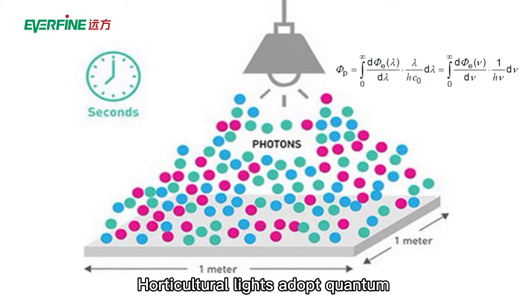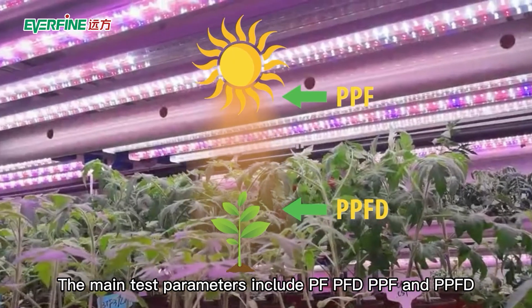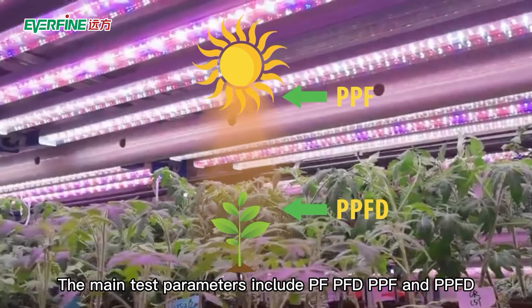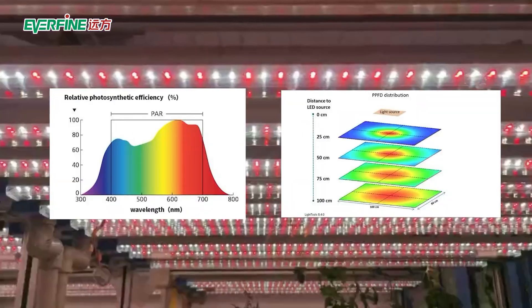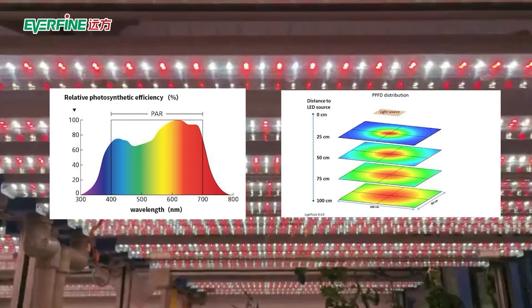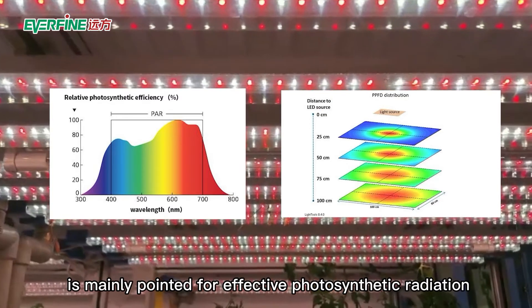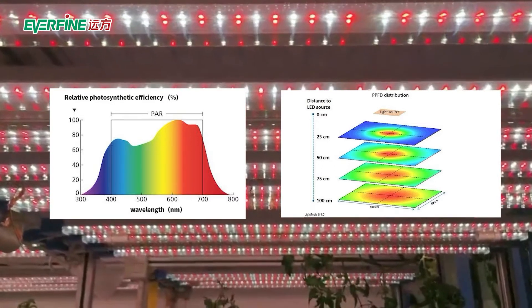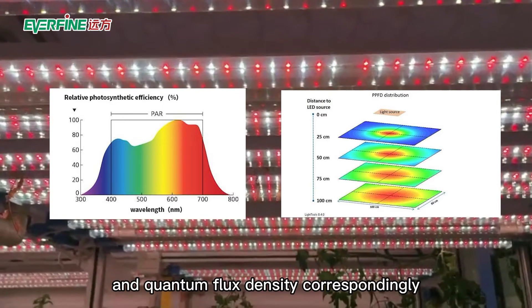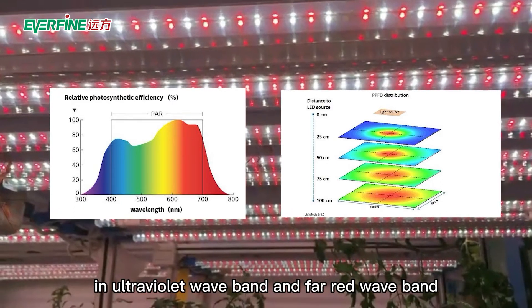Horticultural lights use a quantum or radiation evaluation system. The main test parameters include PPF, PPFD, and related metrics. PPF and PPFD are primarily focused on effective photosynthetic radiation between 400 to 700 nanometers, representing quantum flux and quantum flux density respectively, along with ultraviolet and far-red waveband measurements.